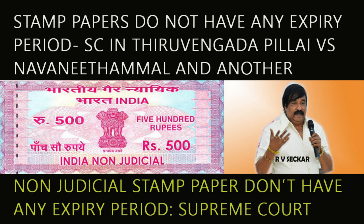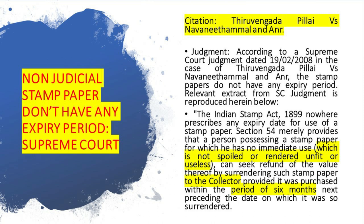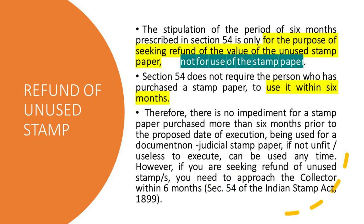The Indian Stamp Act 1899 nowhere prescribes any expiry date for use of a stamp paper. Section 54 merely provides that a person possessing a stamp paper for which he has no immediate use, which is not spoiled or rendered unfit or useless, can seek refund of the value thereof by surrendering such stamp paper to the collector, provided it was purchased within the period of six months next preceding the date on which it was surrendered. The stipulation of six months under Section 54 is only for the purpose of seeking refund of the value of the unused stamp paper and not for the use of stamp paper. Section 54 does not require the person who has purchased the stamp paper to use it within six months. Therefore, there is no impediment for a stamp paper purchased more than six months prior to the proposed date of execution being used for a documentation.